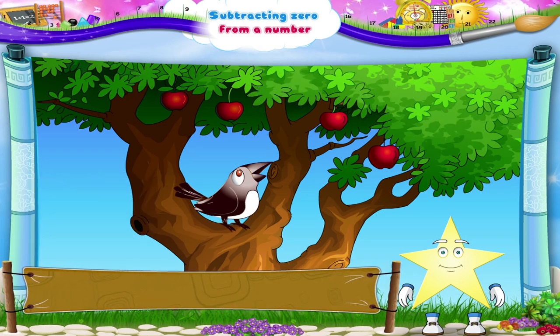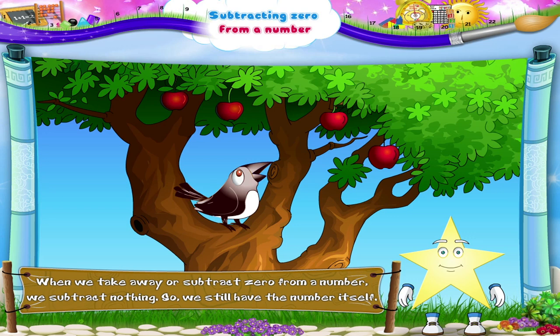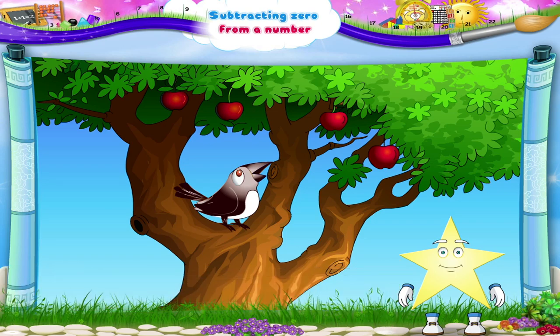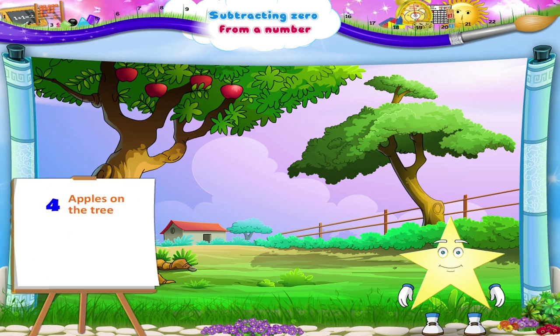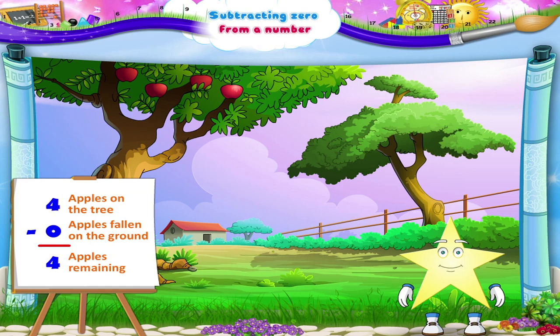Four take away zero apples is four apples. We still have the same number of apples. When we take away or subtract zero from a number, we subtract nothing. So we still have the same number. Are any apples fallen on the ground? None. Zero apples are fallen on the ground. So, four apples on the tree take away zero apples fallen on the ground is four — the same number of apples we had in the beginning.